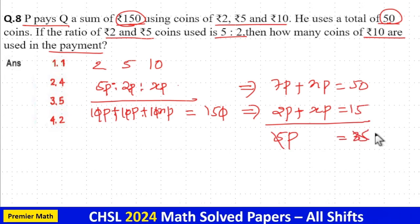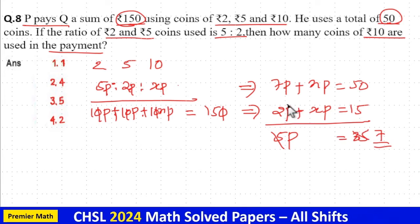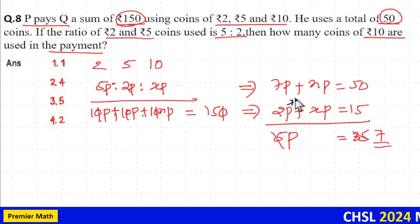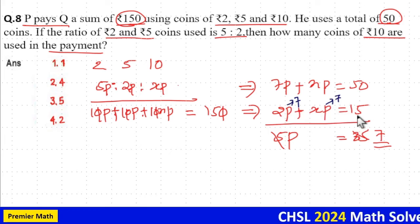So, 1 part is equal to 7. If you put the value of 1 part as 7, this will become 2 into 7, 14, and 14 plus 7X is equal to 15.